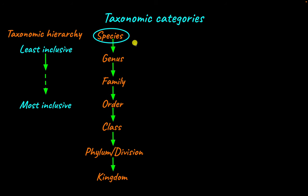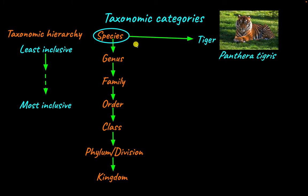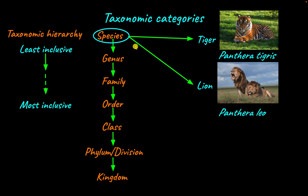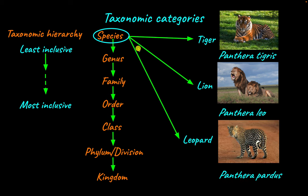Any organism you see is a species. For example, a tiger is a species, a lion is a species, and a leopard is a species. You can tell they are separate species because you can clearly differentiate them — you wouldn't see a lion and say that's a tiger. So these organisms are individual species.